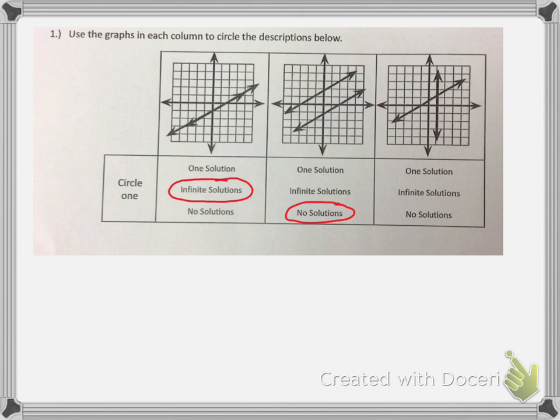Our third graph has two lines that are intersecting or that cross. When lines intersect or cross, they have a single solution, so we say that that is one solution.